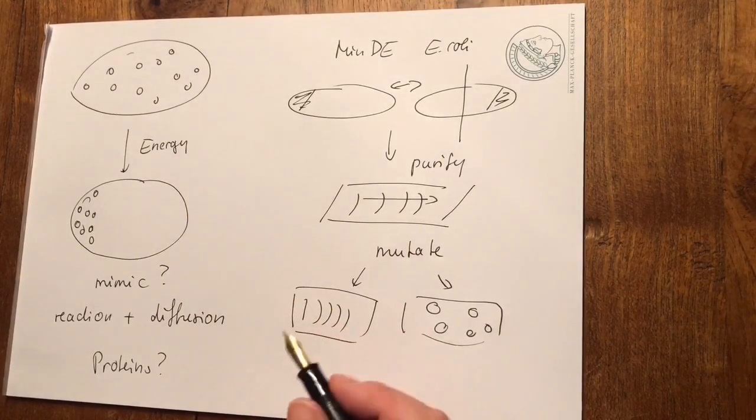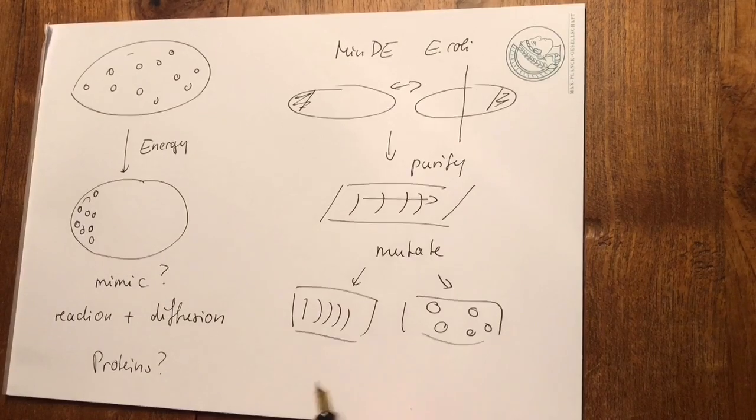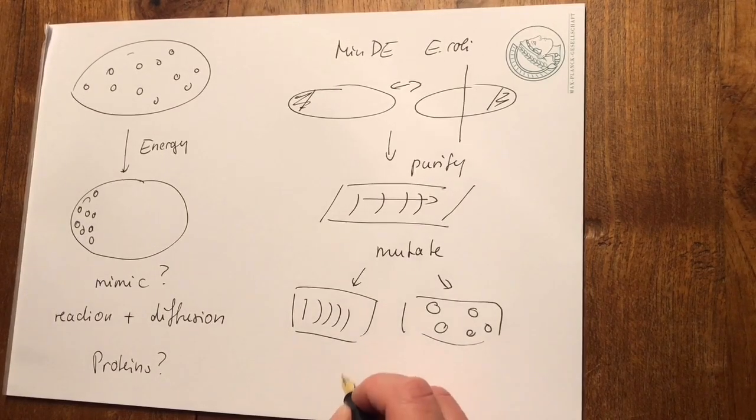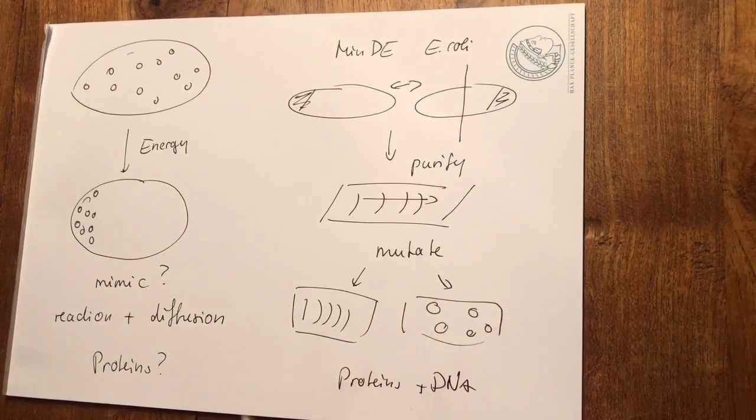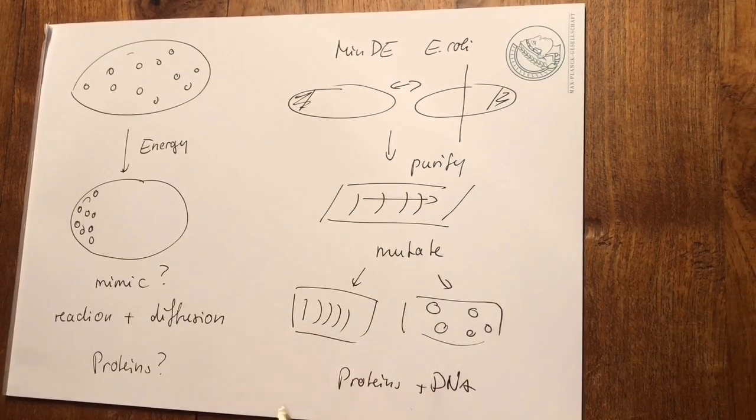And we can even go further and not stay with the proteins, but create hybrids between proteins and DNA and produce completely new molecules that are potent of pattern formation, which is so fundamental for the emergence of life.